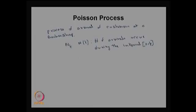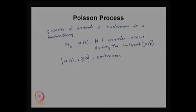For fixed t, N(t) is a random variable. Since the parameter space of t is [0, ∞), this falls under the classification of a continuous parameter process. The possible values of N(t) are 0, 1, 2, ... which is countably infinite. Therefore, N(t) for t ≥ 0 is a continuous-time, discrete-state stochastic process.